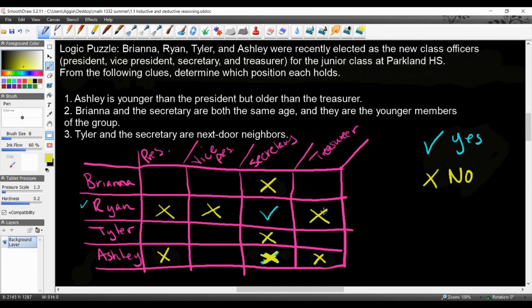Alright, moving on. What other information do we have? We have that Ashley is younger than the president and older than the treasurer. You know, we have something even better. So you see how I crossed out these X's here and we had this one check mark. Take a moment and look at our chart and see if you see anything like that here. You should have spotted it right here. So we see that Ashley is not the president, she's not the secretary, and she's not the treasurer. Therefore, she must be the vice president.